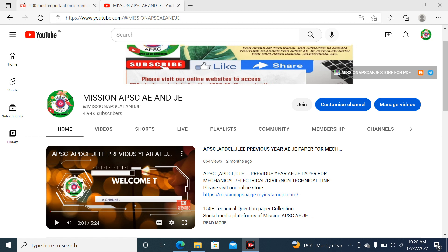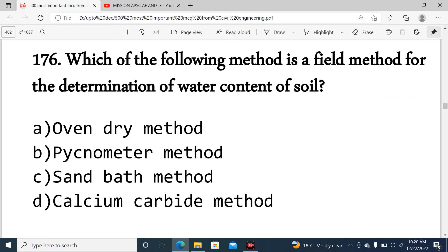Question number 176: Which of the following method is a field method for the determination of water content of soil? The options are oven dry method, pycnometer method, sand bath method, and calcium carbide method.